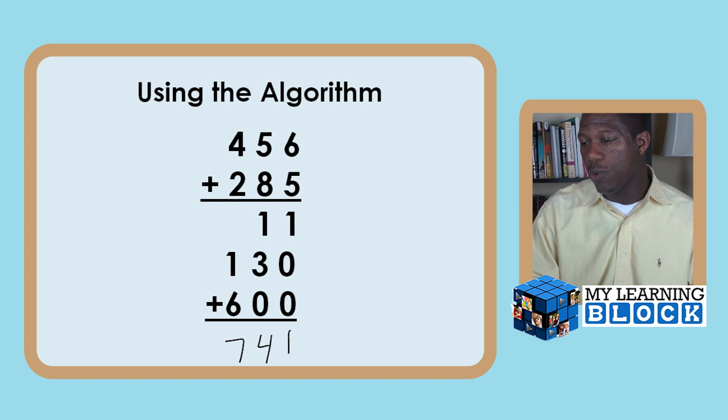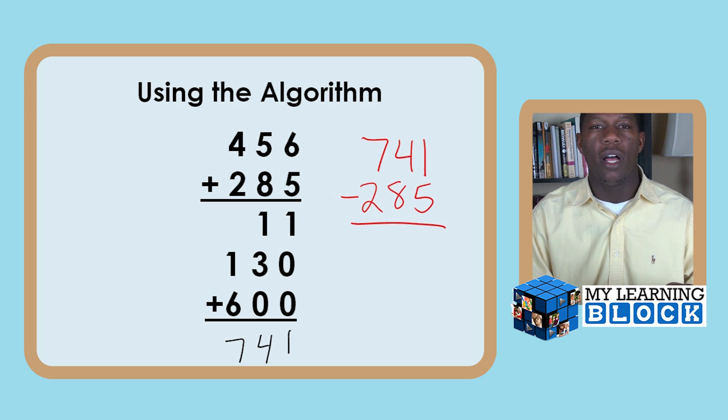And again, you want your child to go ahead and start this process. So make sure you're teaching this simultaneously with the subtraction and regrouping so they can subtract this number, 285 by 741. And let's see what happens. 741 minus 285. And what this also does, I forgot to mention, it shows your child the inverse relationship between addition and subtraction. So it helps in many places.